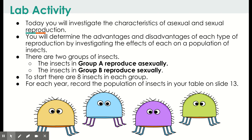There will be two groups of insects that you will be investigating. The insects in group A reproduce asexually, and the insects in group B reproduce sexually. Remember, asexually reproducing organisms only need one parent and all offspring will be genetically identical. Sexually reproducing organisms need two parents and the offspring they produce are going to be genetically unique.